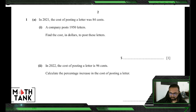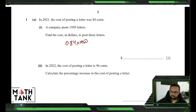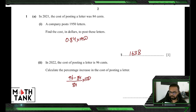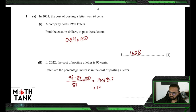In 2021, the cost of posting a letter was 84 cents. The company posts 1,950 letters, so the cost is 0.84 multiplied by 1,950, giving $1,638. In 2022 the cost is 96 cents. The percentage increase is 96 minus 84 divided by 84 — keeping everything in cents, the units cancel. That gives 14.2857, which rounds to 14.3 percent.